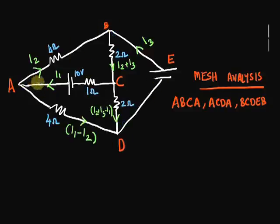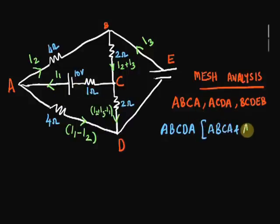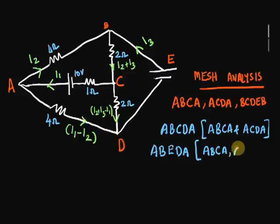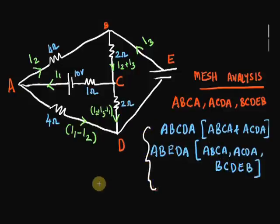On the other hand, if you look at the loop ADCDA, it contains two loops, ACBA and ADCA. And a loop like ABEBA contains three loops within it: ABCA, ADCA, and BCDEB. Hence, these two loops are not called meshes.